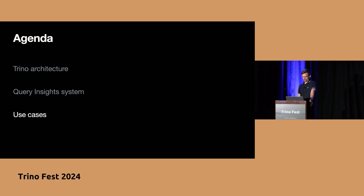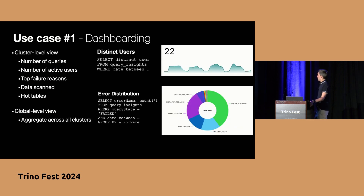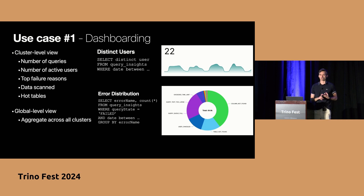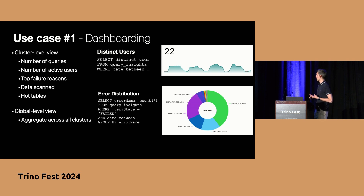So let me quickly cover the use cases. Use case number one is dashboarding. Previously, the only thing cluster admins could rely on was the Trino UI, but the Trino UI doesn't keep data around for very long. With this dataset, you can see longer-term trends such as the number of queries executed on a given day, the number of distinct users, the number of failed queries or top failure reasons, how much data is being scanned, which are your hot tables — and you can track all of these on a weekly or monthly basis to see trend lines.